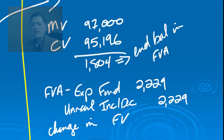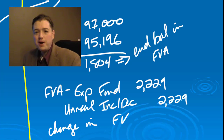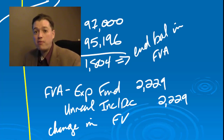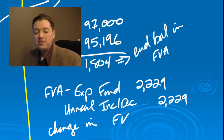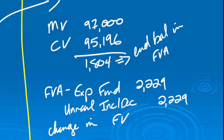Hopefully that makes sense. I know that process is very involved, but it's important to understand that even if it's an available-for-sale or trading security, I have to amortize away the value of a premium or discount because I've got to get back to that fair value number.